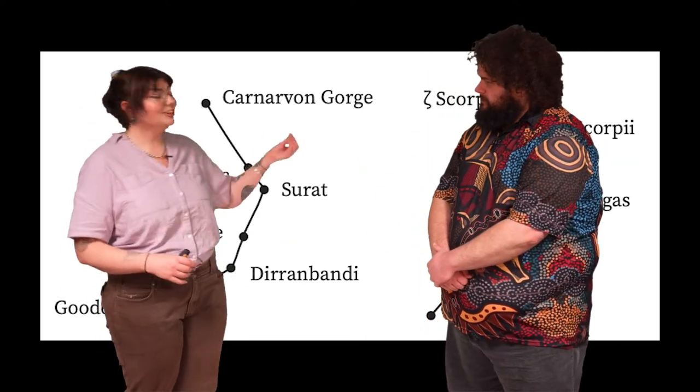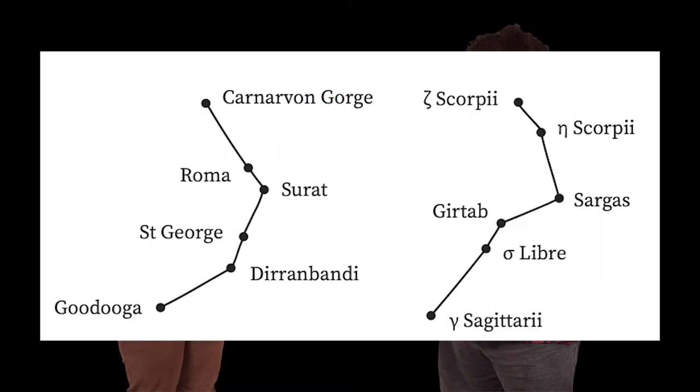So for example, each star in the constellation on the right refers to a specific location on the ground and those features, those landmarks, they're the things that are going to help guide you on your journey.